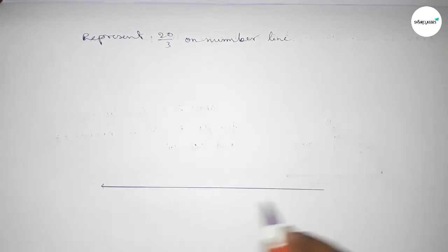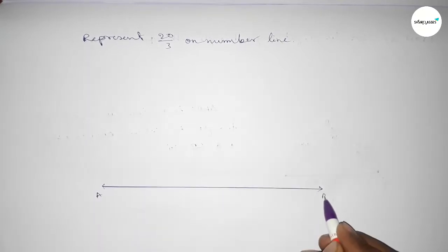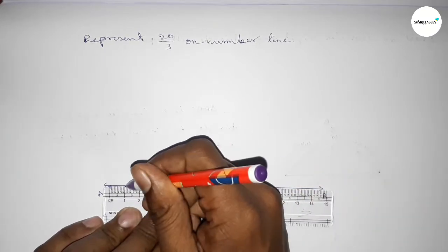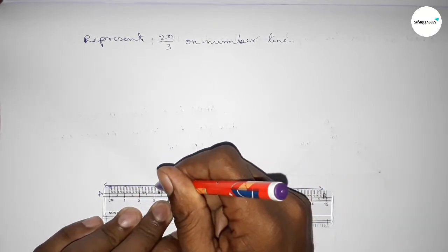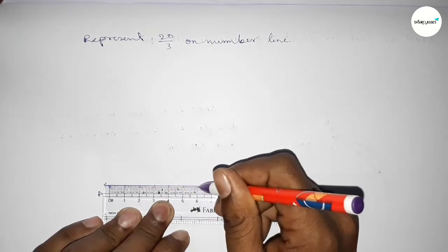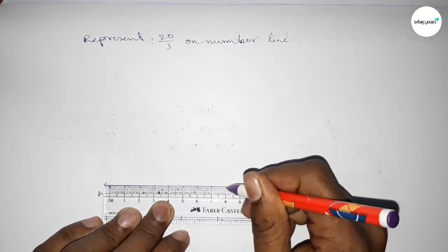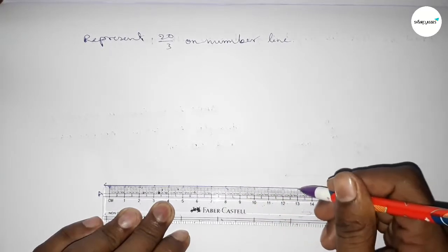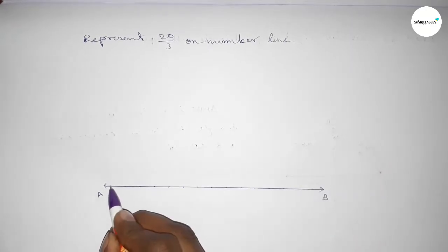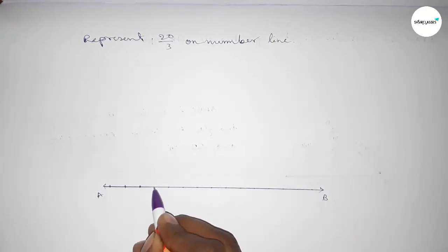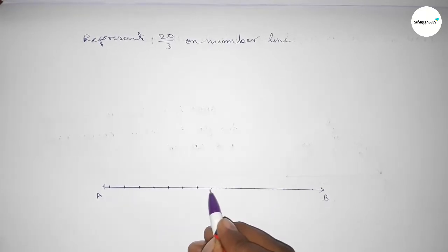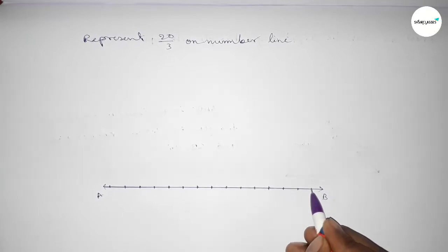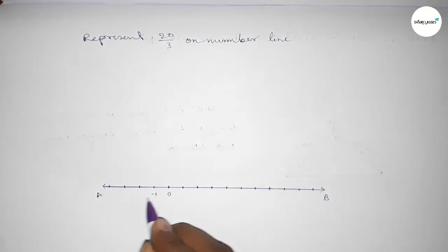First, drawing here a line and taking arrow marks on both sides, and taking here point A and point B. Next, we have to mark the numbers on the line using a scale. Now drawing the number line and marking the numbers with deep color to understand perfectly.